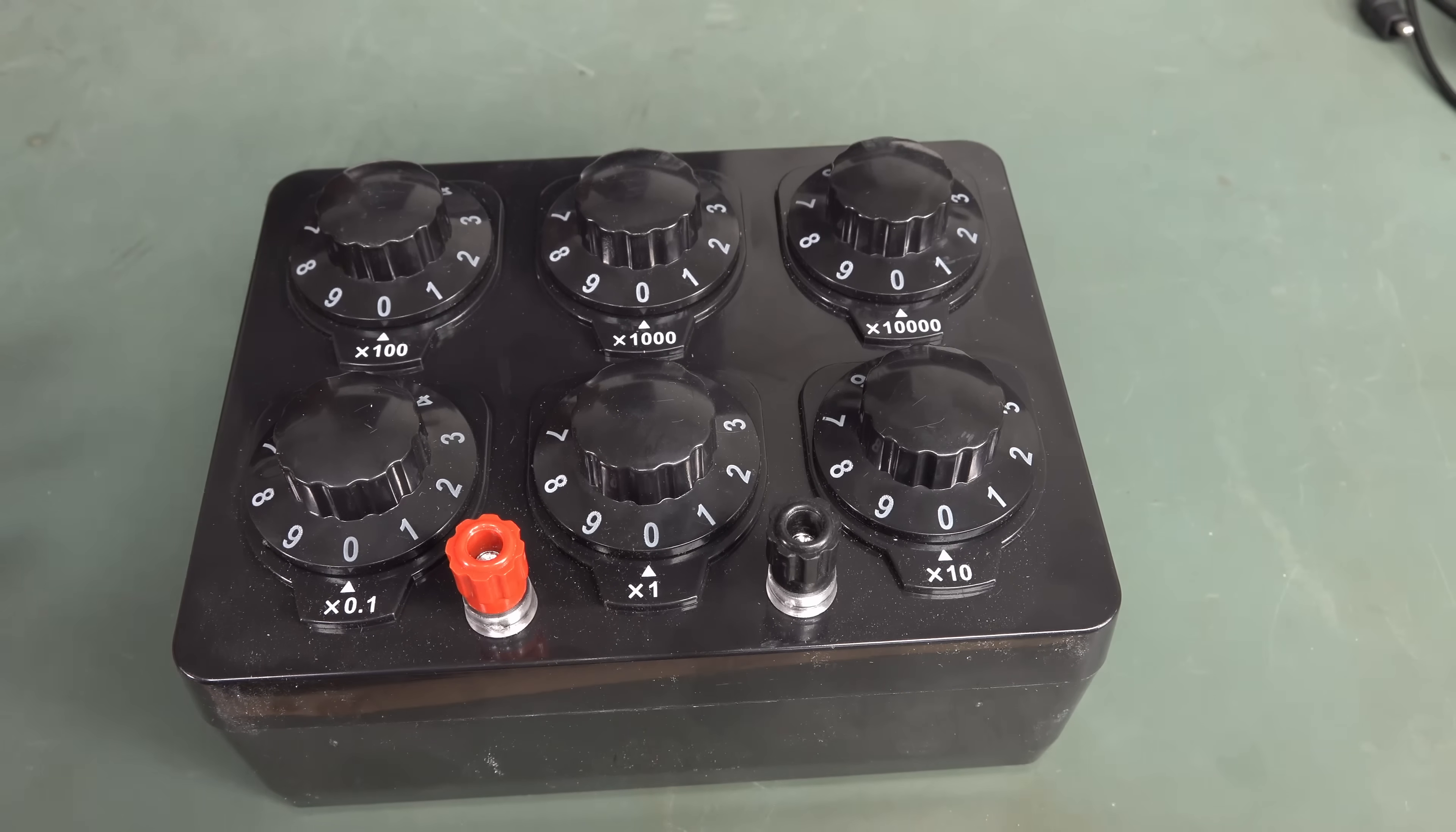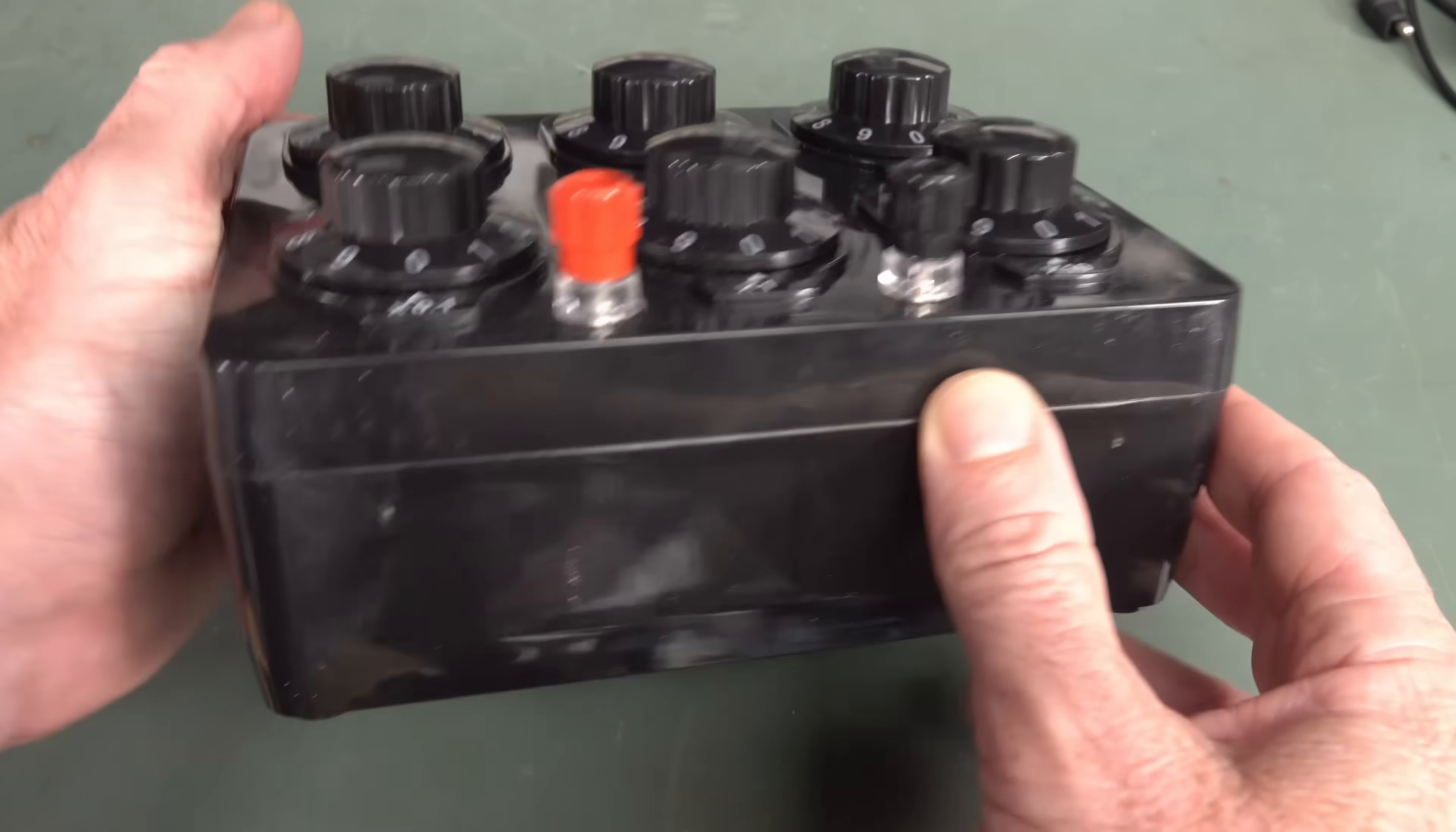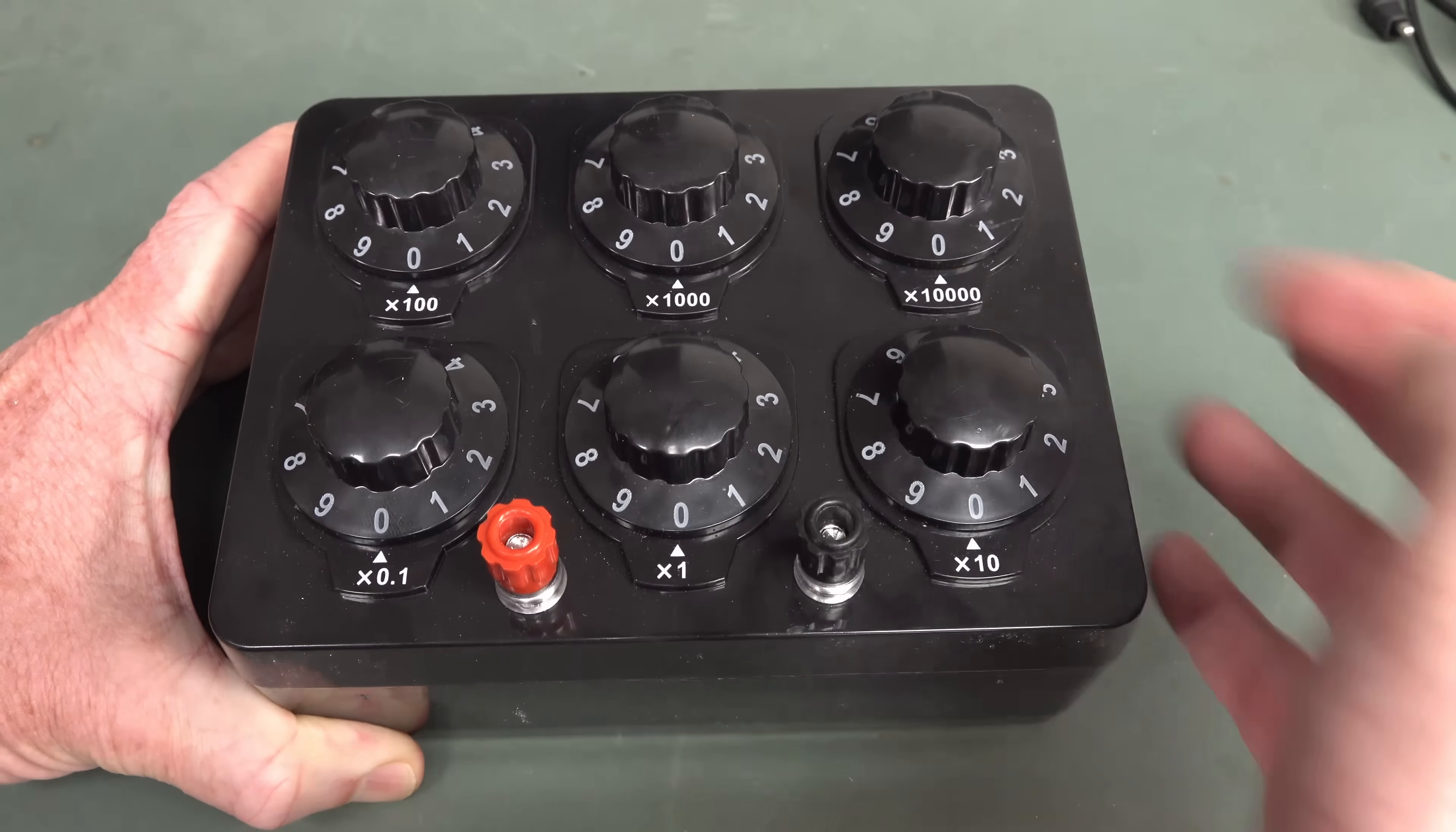The amazing thing about this is that you can now get these dirt cheap. You can get this six-decade one for normally 27 Australian dollars delivered from China. But it's under 20 bucks at the moment on special. And the five-decade version is slightly under $6 on special. It's just ridiculous.